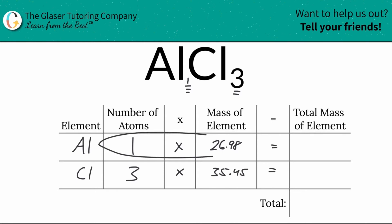Now all you're simply going to do is multiply the row to get the total mass of the element in the entire compound. So this is going to be 26.98 grams of aluminum. And then the total mass of the chlorine here is going to be roughly about 106.35.